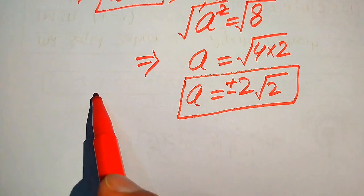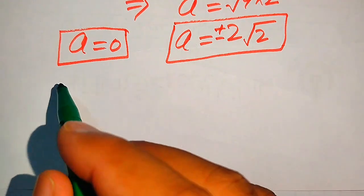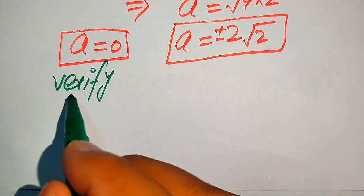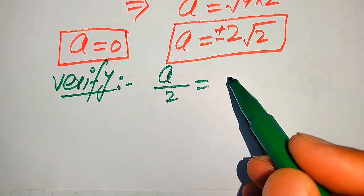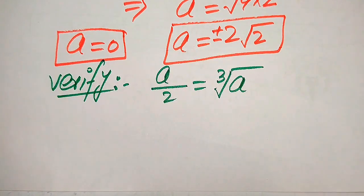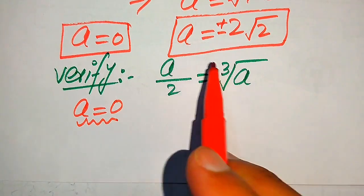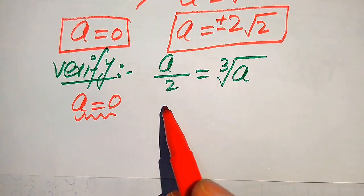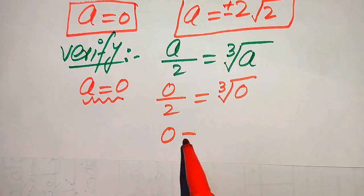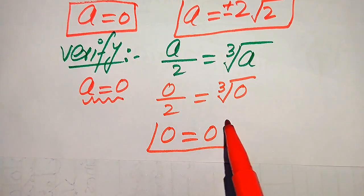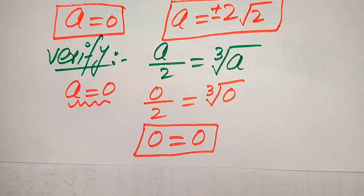We have three roots: A equals 0, and A equals plus or minus 2 root 2. We now verify each. Substituting A equals 0 into the original equation: 0 over 2 equals cube root of 0, which gives 0 equals 0. So A equals 0 satisfies the equation and is the first valid solution.